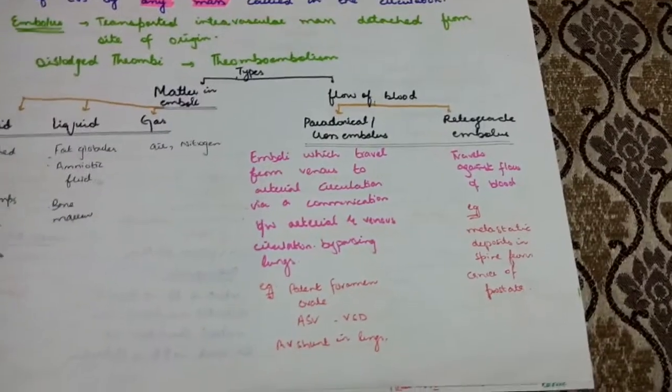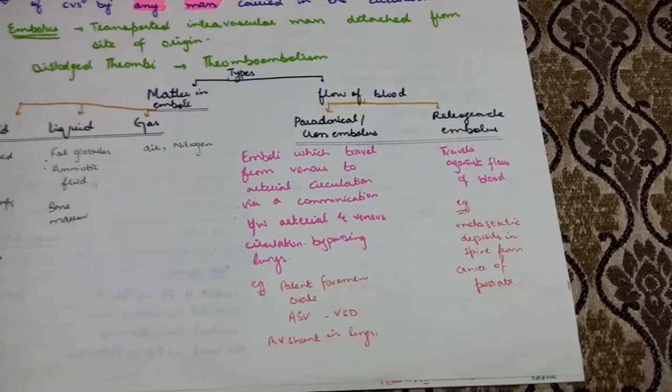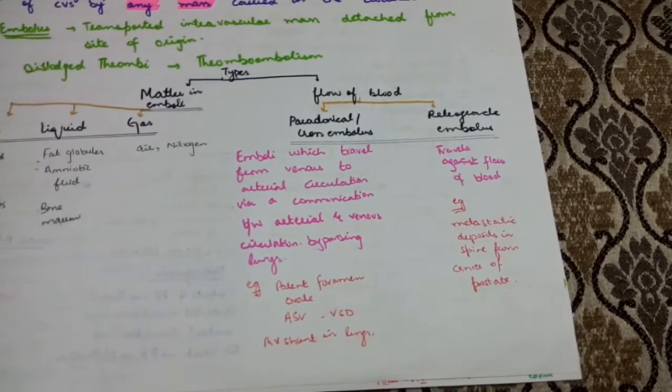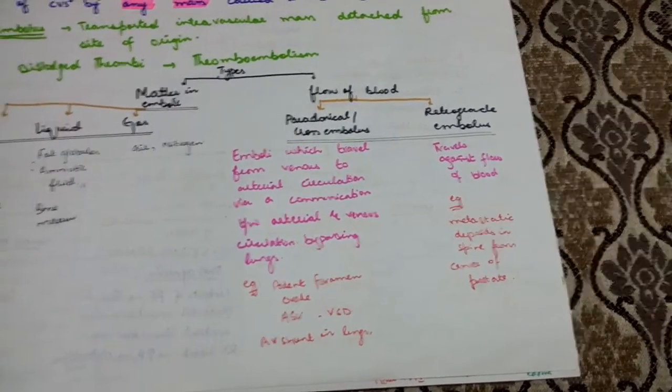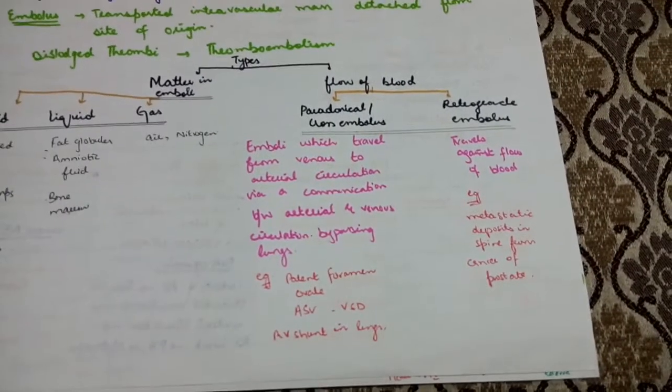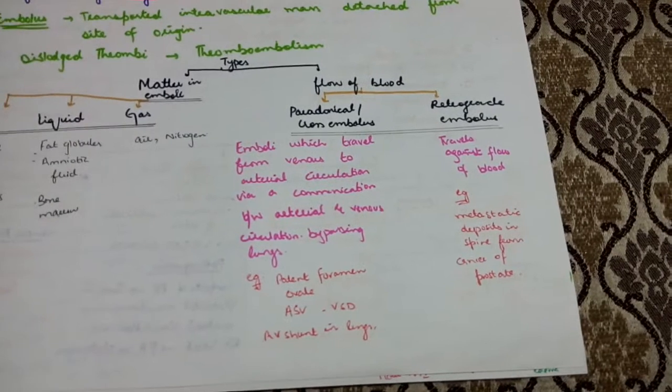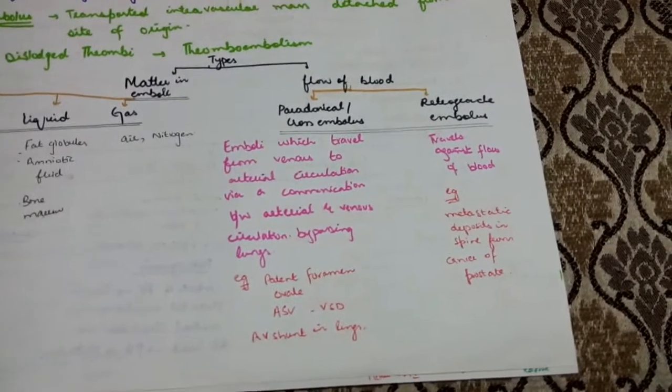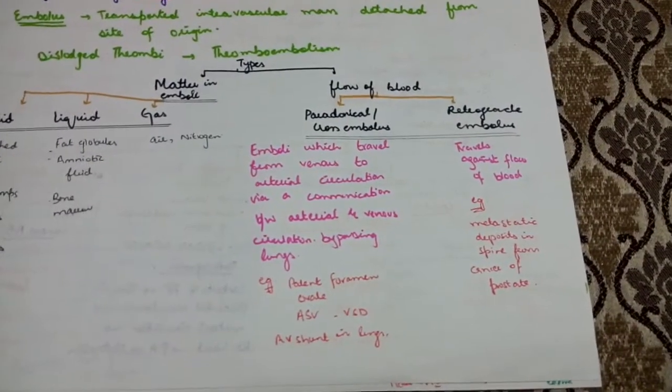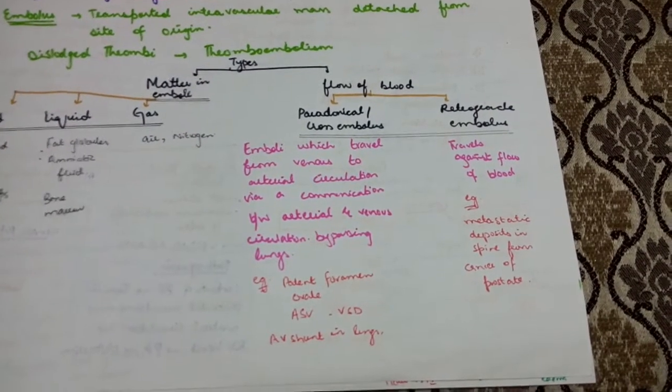On the basis of flow of blood we divide it into two. First is paradoxical crossed embolism - emboli which travel from venous to arterial circulation via communication such as ASD, VSD, or patent foramen ovale. Retrograde embolism travels against the flow of blood, for example metastasis deposits in the spine from cancer of prostate.